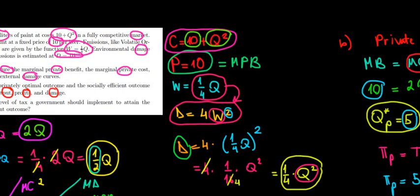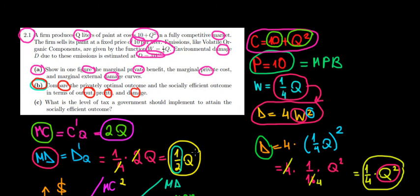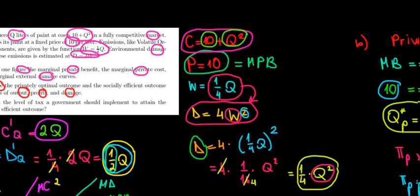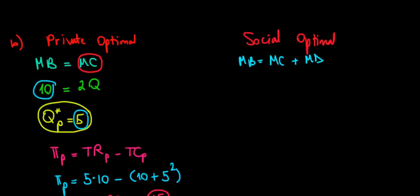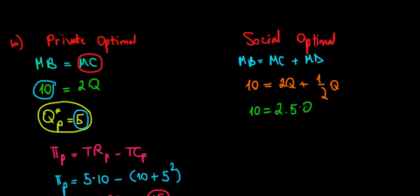The marginal damage we calculated before is (1/2)Q. The marginal benefit is still $10 since we sell at $10. So: 10 = 2Q + (1/2)Q = 2.5Q, giving us an optimal quantity for society of 4 units.